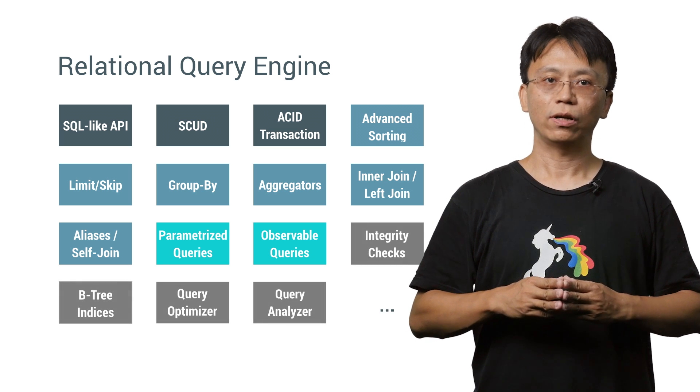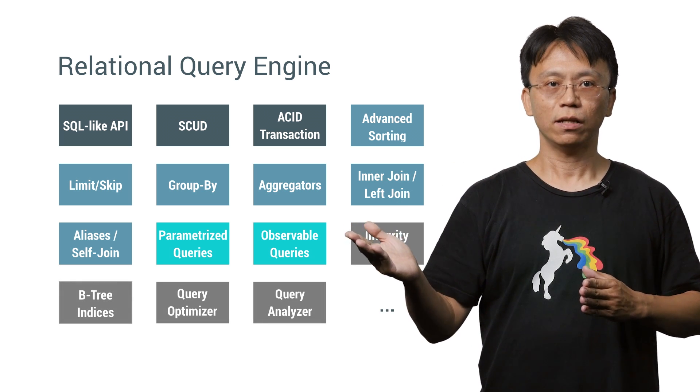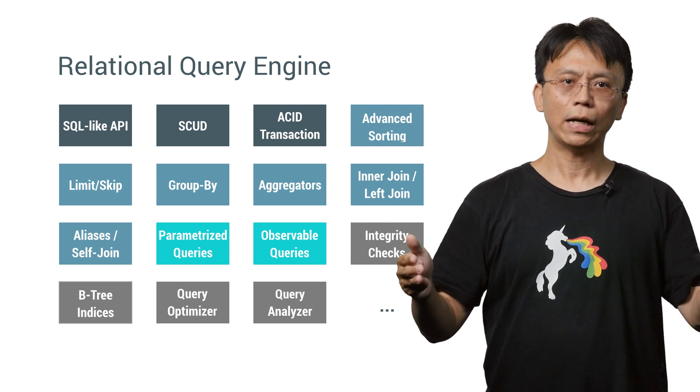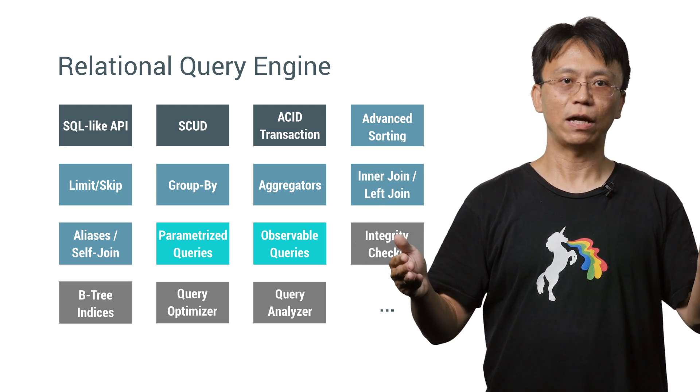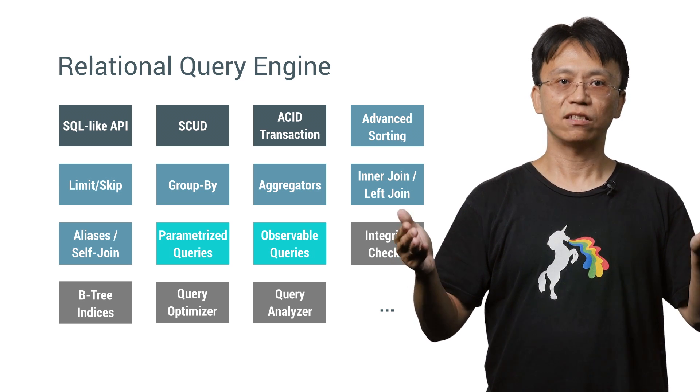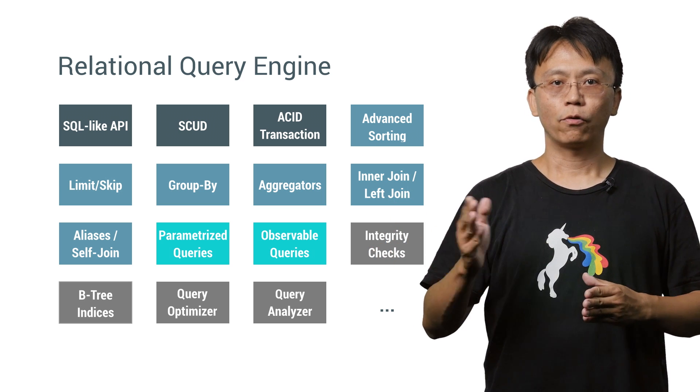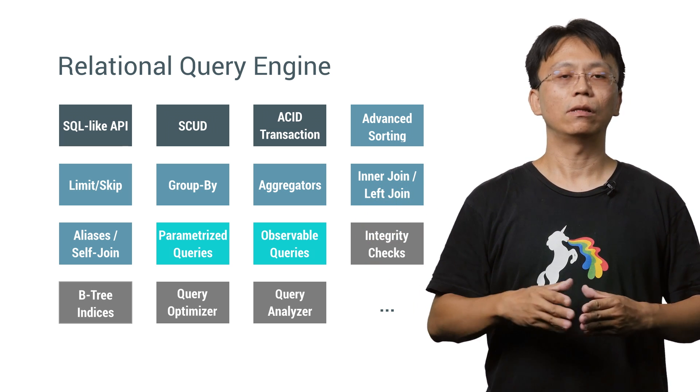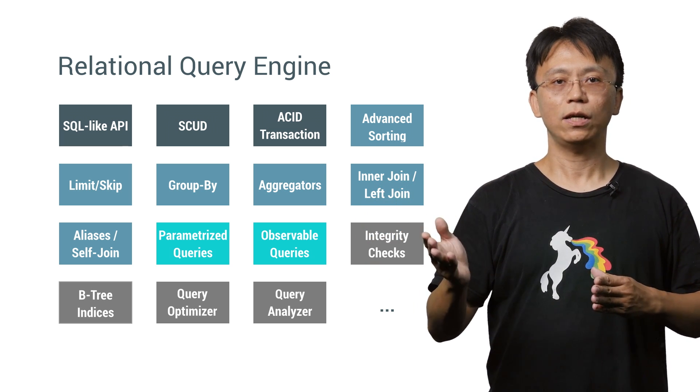Behavior-wise, Lovefield has integrity constraint checks, B plus tree for indices, query optimizer to ensure that the best indices are used and the queries are run as fast as possible, and a query analyzer to display the user how the query is executed, so that developers can tune their database and queries.